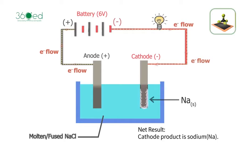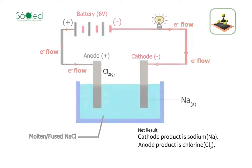As a net result, we get sodium as cathode product and chlorine gas as anode product.